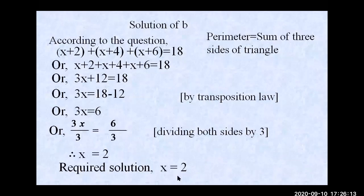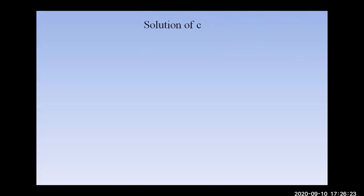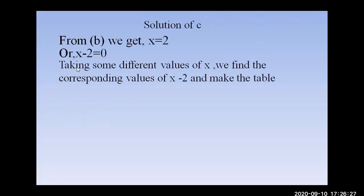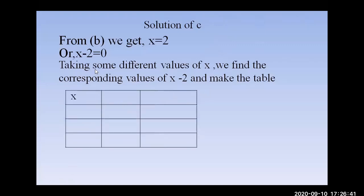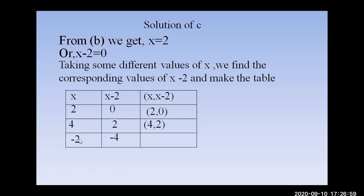Solution part (c): From part (b), x = 2. To show this on a graph, rewrite as x − 2 = 0. Make a table of x and x − 2. If x = 2, then x − 2 = 0, giving (2, 0). If x = 4, then 4 − 2 = 2, giving (4, 2). If x = −2, then −2 − 2 = −4, giving (−2, −4). Plot these three points.